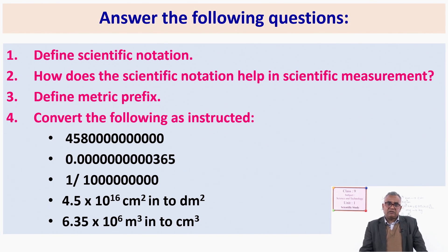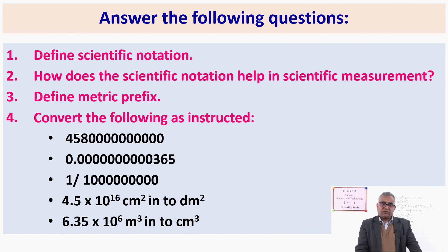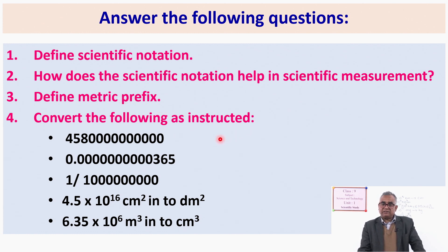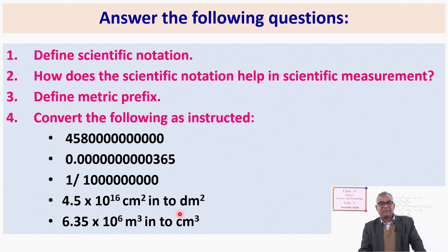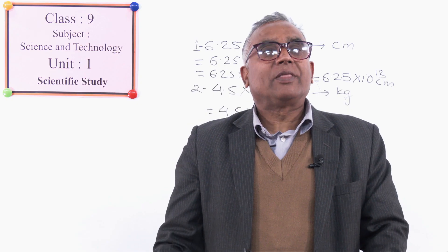Now there are some questions. Copy them and answer. Define scientific notation. How does scientific notation help in scientific measurement? Define metric prefix. Convert the following as instructed — some require converting to scientific notation and some require unit conversion as well. Some more difficult conversions — like centimeter square into decimeter square — will be discussed in the next class. Okay students, that is all for today. Thank you very much.